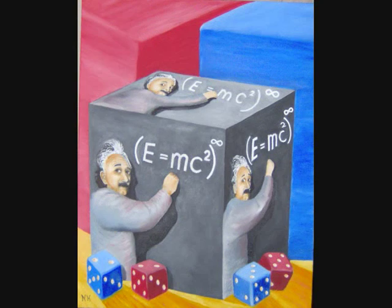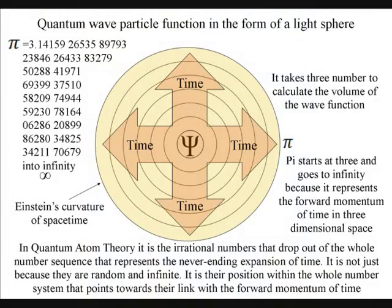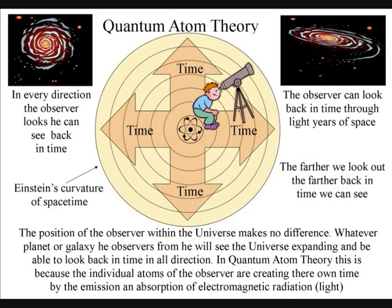To fully understand this, we need to look not just down into the probability of the quantum world of the atoms, but also up into the beauty and perfection of the night sky. If we look up at the stars, we can see back in time through light-years of space. The further we look, the further we see back in time.